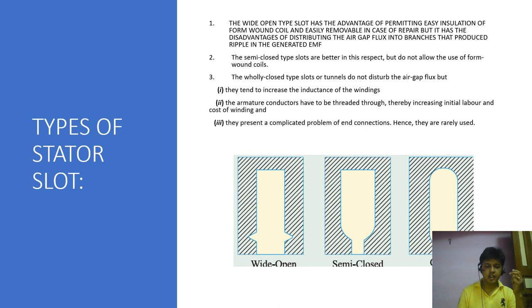So we are now going to discuss about how many type of stator slot is used. The first one is wide open type slot, second one is semi-closed type slot, and third one is fully closed type slot. In fully closed type slot, that tends to increase the inductance of the winding. The armature conductor have to be threaded through, thereby increasing the initial labor and cost of the winding. They present a complicated problem of end connection. Hence they are rarely used.